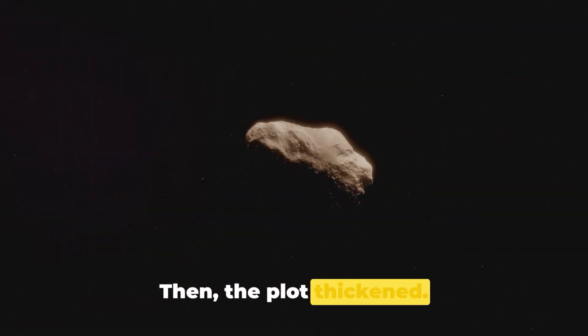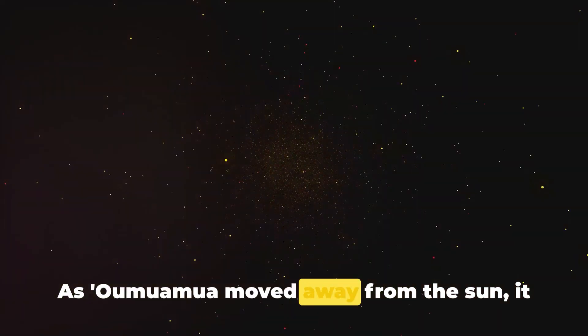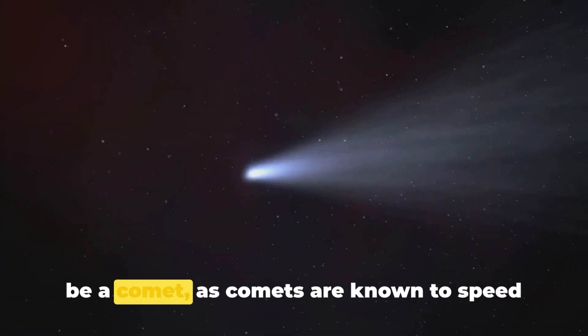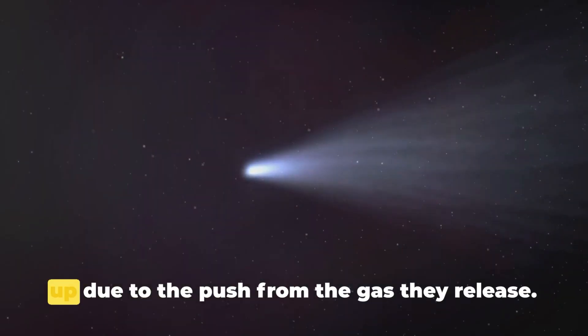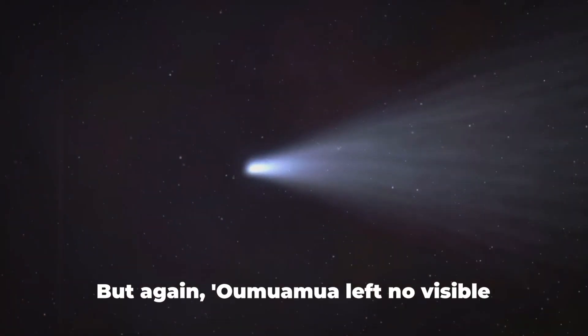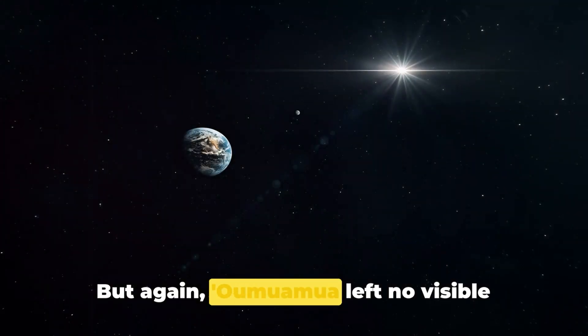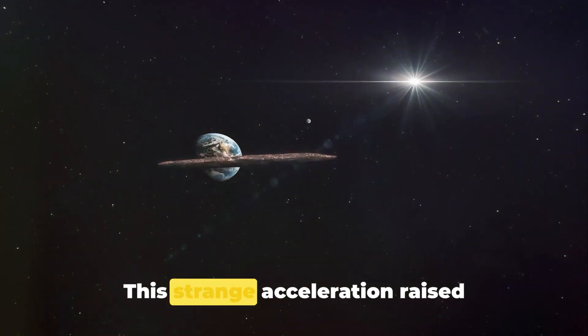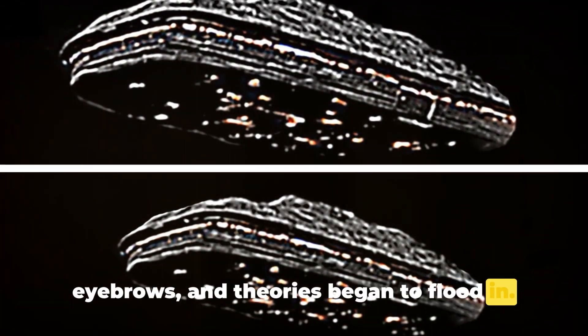Then, the plot thickened. As Oumuamua moved away from the sun, it accelerated, contrary to the laws of celestial mechanics. This led some to speculate that it might be a comet, as comets are known to speed up due to the push from the gas they release. But again, Oumuamua left no visible trail of gas or dust behind. This strange acceleration raised eyebrows and theories began to flood in.